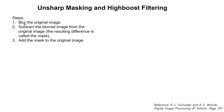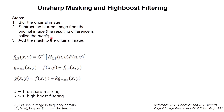First, we need to blur our original image. Next, we subtract the blur image from the original image and we get a mask. Finally, we add the mask to the original image and we get the sharpened image.